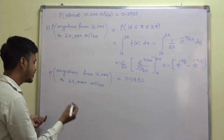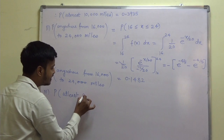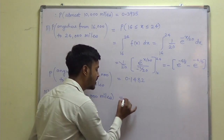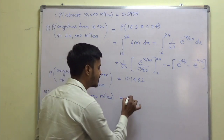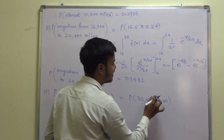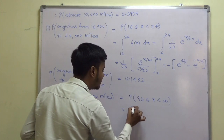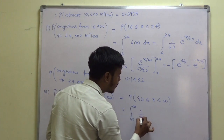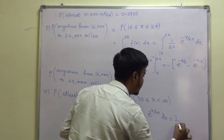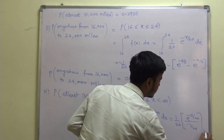The third probability: what is the probability of at least 30,000 miles? At least 30,000 miles means the minimum is 30 and the maximum can be anything — infinity. So it is the probability of 30 ≤ x < ∞, which equals the integration from 30 to infinity of (1/20) e^(−x/20) dx.